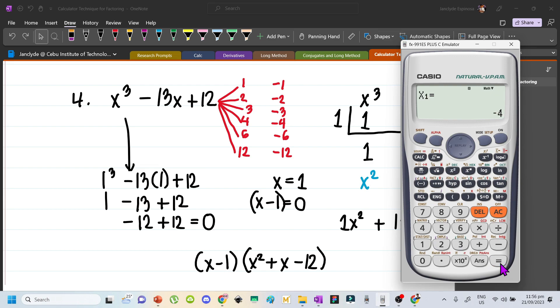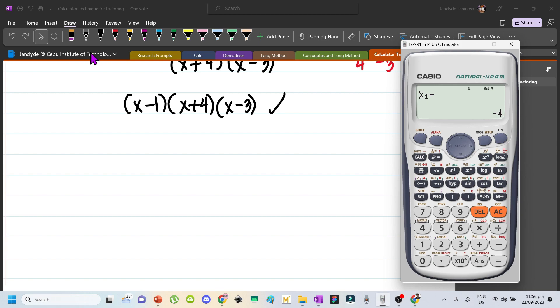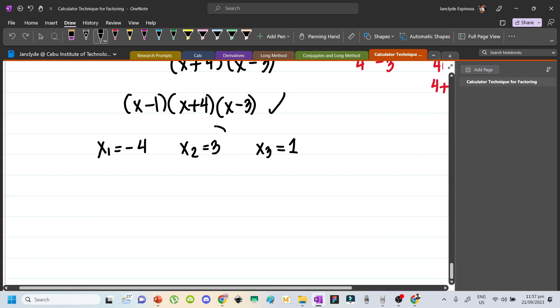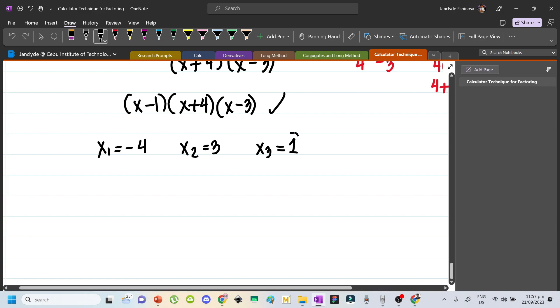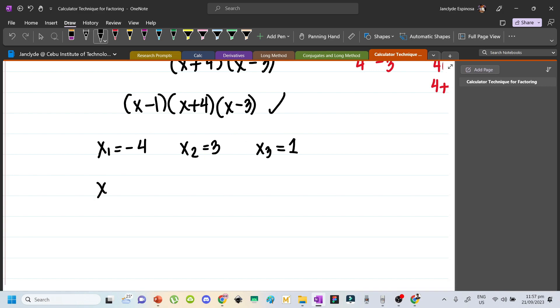Press equals and our x1 is negative 4, x2 is 3, and x3 is 1. Setting these to 0, we can move all of these to the left side. So we will have x plus 4 equals 0, x minus 3 equals 0, and x minus 1 equals 0. These will be your factors, which is the same with this one.